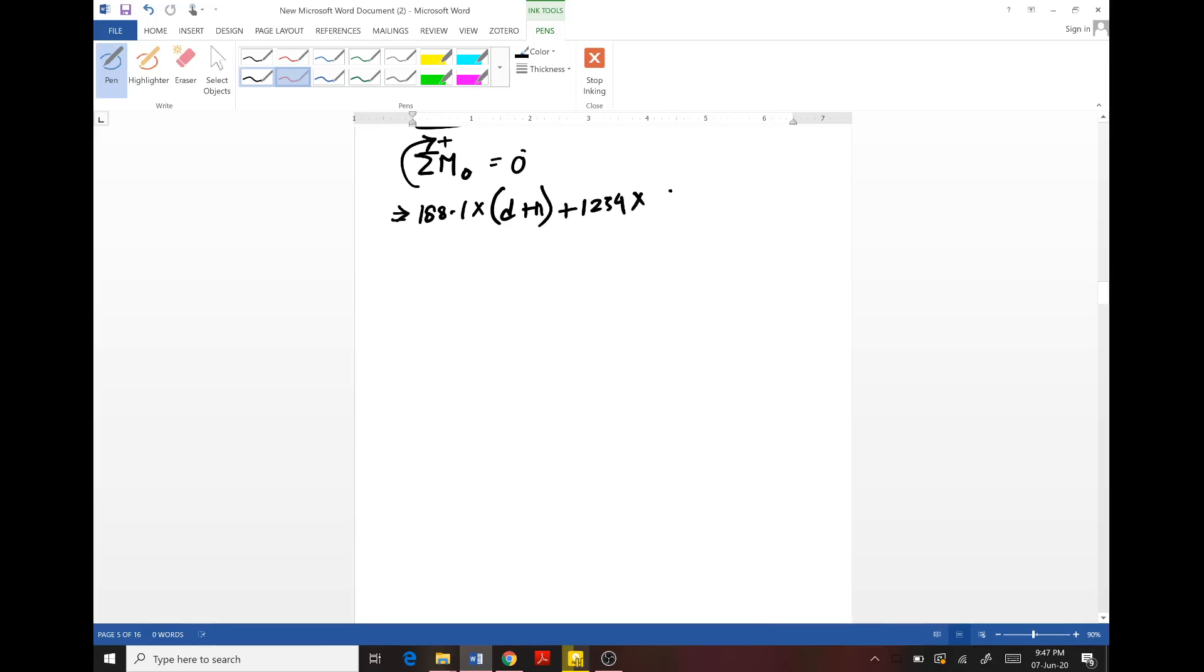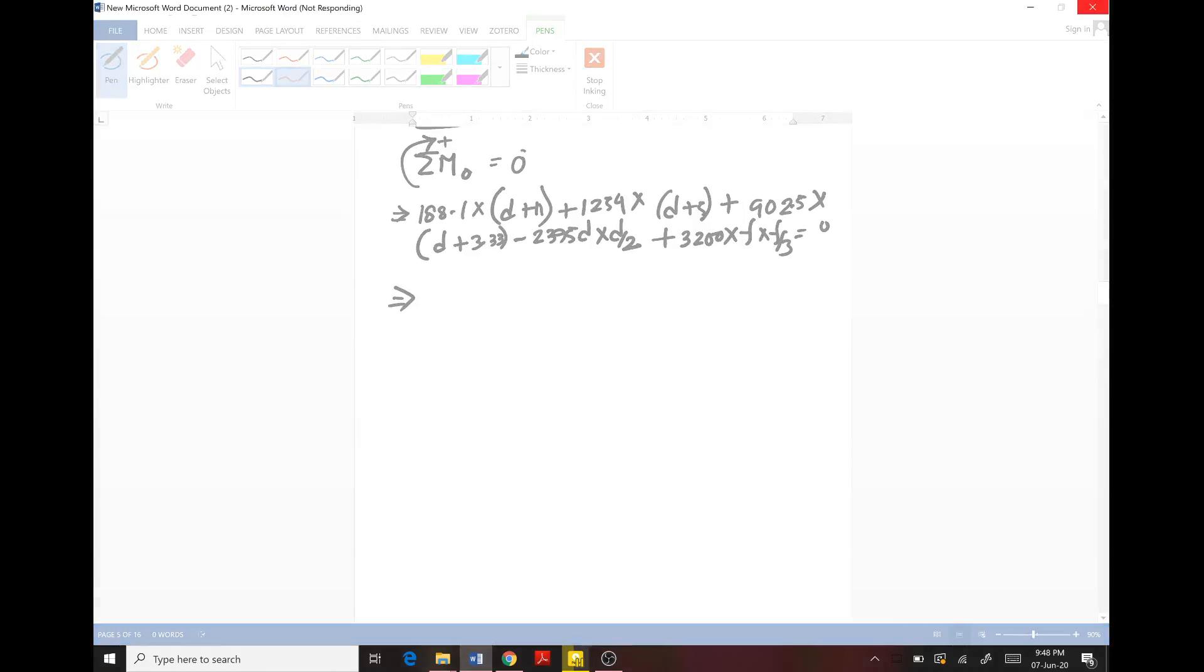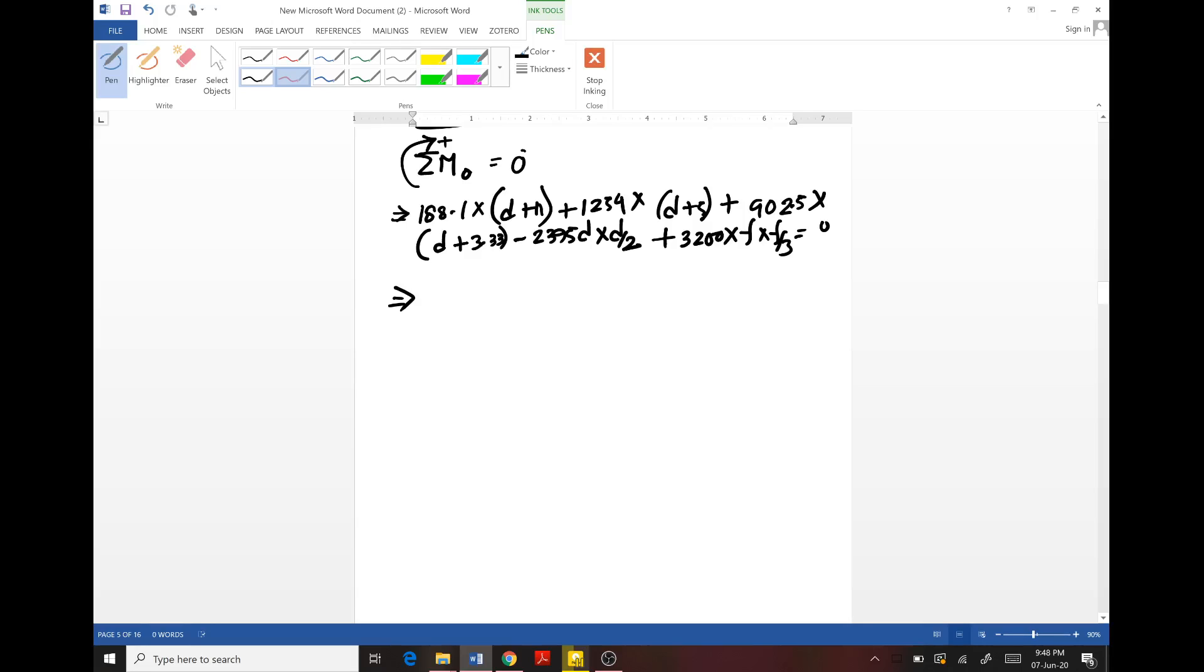188.1 into (D plus 11) plus 1254 into (D plus 5) plus 902.5 into (D plus 3.33) minus 2395D into D by 2 plus F into F by 3. Then you will get an equation of D squared, and you will put the value of F from equation one.